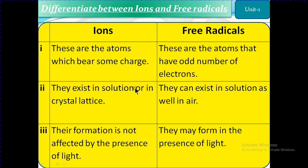Ions exist in solution or in crystal lattice. Whereas free radicals can exist in solution, same as ions, but also in air. Ions cannot exist in air.